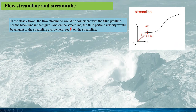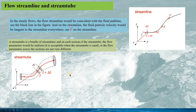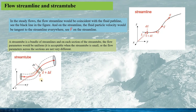In steady flows, the flow streamlines would be coincident with the fluid path. On the streamline, the fluid particle velocity would be tangent to the streamline everywhere, as seen in the velocity vector v. For deriving Bernoulli's equation, a stream tube may be a better idea. A stream tube is a band of streamlines, and all these streamlines have the same physical parameters. Therefore on each section of the stream tube, the flow parameters would be uniform — this is acceptable when the stream tube is small or the flow is not changing very much across the section.